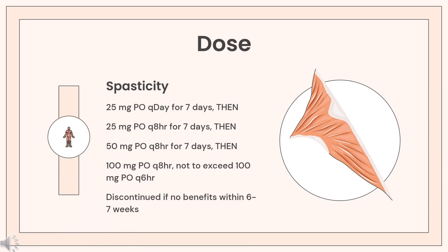Dose — Malignant hyperthermia: 2.5 mg per kg rapid IV bolus, repeat PRN. Sometimes up to 10 mg/kg cumulative dose is necessary, up to 30 mg per kg. Maintenance: 1 mg per kg every 4–6 hours, or 0.25 mg per kg per hour for infusion. Monitor overnight in hospital for 24 to 48 hours.